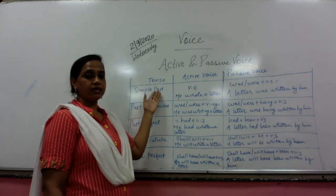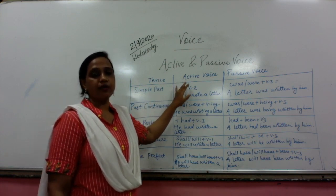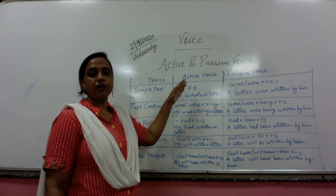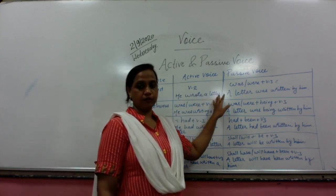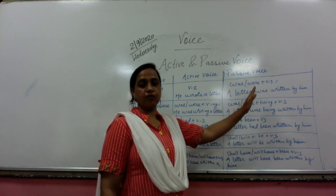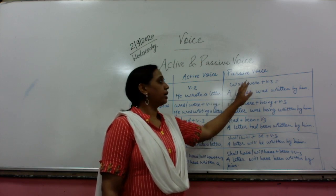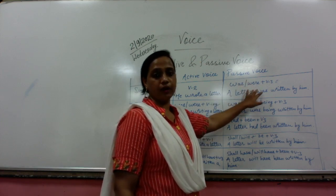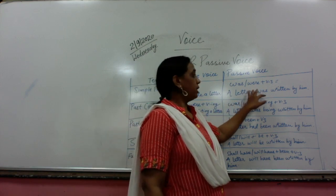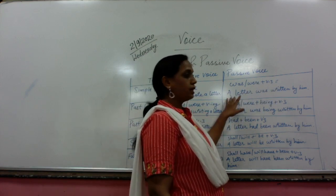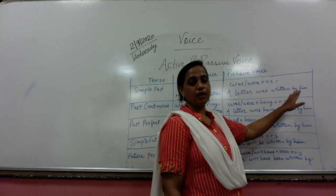When your sentence is in simple past tense, in active voice the verb is in second form: 'He wrote a letter.' To convert into passive voice, use 'was' or 'were' as per the number of the subject, followed by the past participle: 'A letter was written by him.'